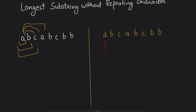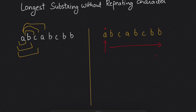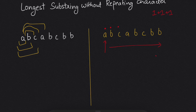A better solution would be: start from the beginning and while moving forward in the string, keep checking whether the character we are at right now has been seen before or not. For example, we are at 'a' — seeing it for the first time, so we add one to our length. Then we come to 'b', also first time, add one again. Then 'c', also first time, add one more. Then we come to 'a', but we have seen 'a' before.